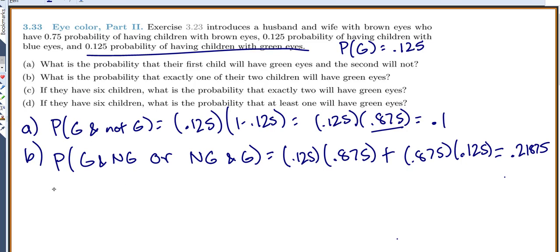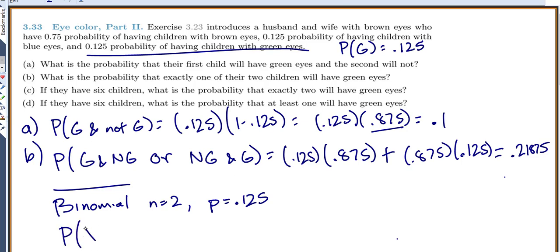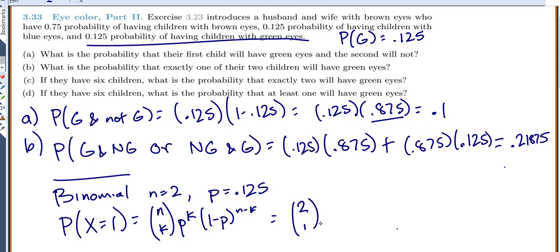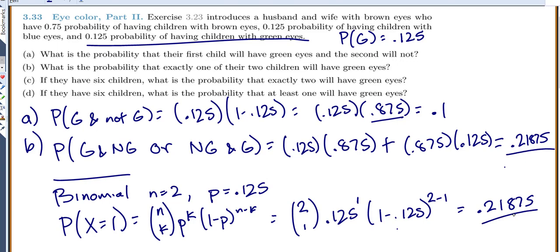You might notice I just did that with basic probability rules, but we're in the binomial distribution section, so we could use the binomial distribution. We have two children, a set probability of green eyes, and each child is independent — this is binomial. With n equals 2 and p equals 0.125, the probability that x equals 1 is: 2 choose 1 times 0.125 to the power of 1 times 0.875 to the power of 1, which gives 0.21875. Either approach gives the same answer.